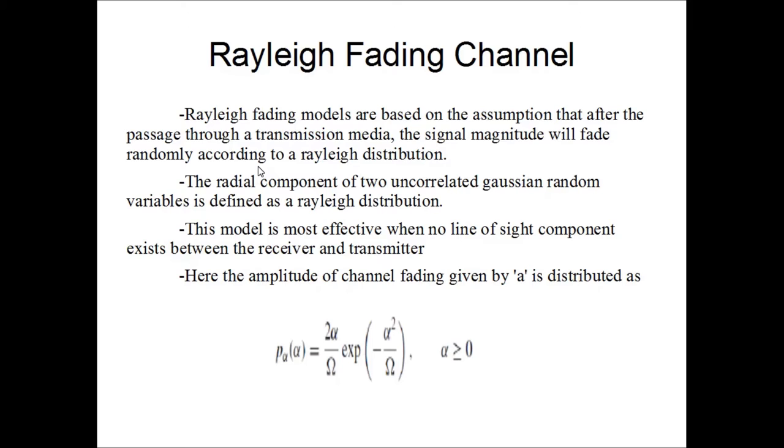Rayleigh distribution is defined as the radial component of two uncorrelated Gaussian random variables. This model is also very effective when there is no line-of-sight component between the receiver and the transmitter, which is usually the case in very dense urban areas and very densely populated cities. And here is an equation which shows the fading of the amplitude in the Rayleigh fading channel.